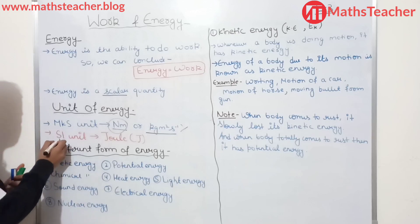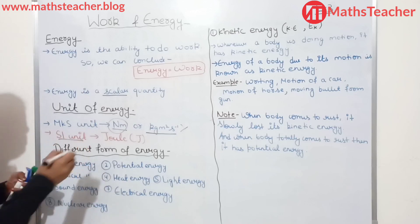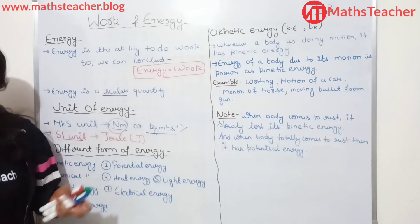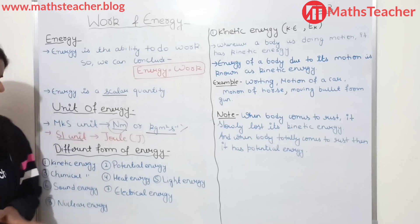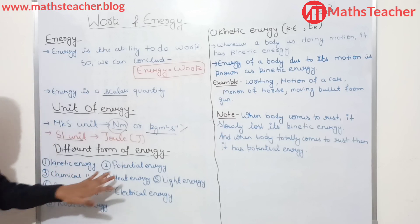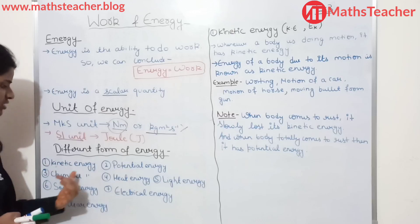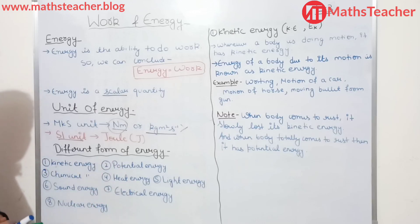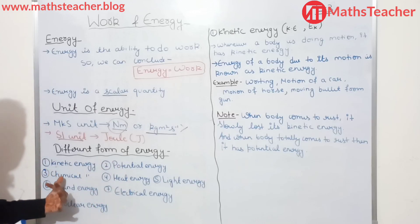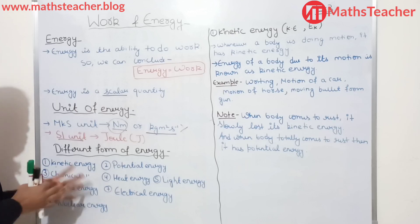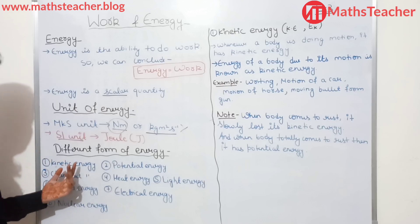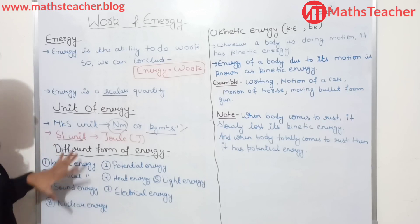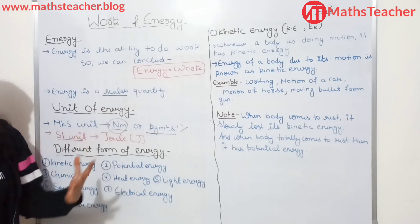Now, different forms of energy. The SI unit is important. First is kinetic energy, second is potential energy — these two are in your syllabus, we will study them broadly. Next is chemical energy. Kinetic energy is the energy that is in bodies that are in motion.